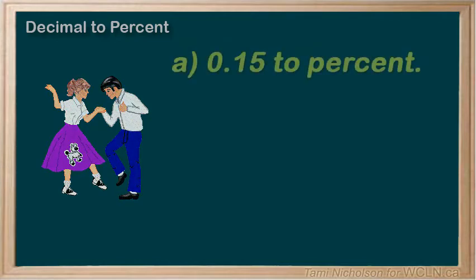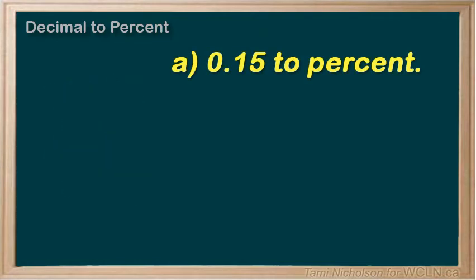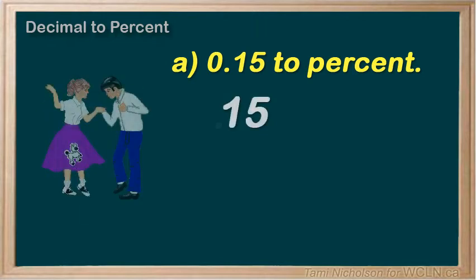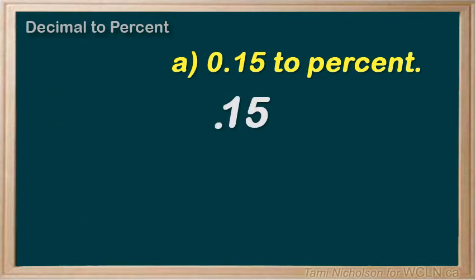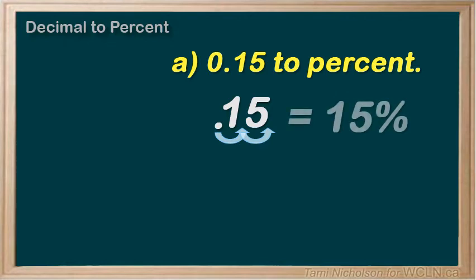Here we have 0.15. Multiply by 100 — do your percent POCA. Move the decimal point two spaces to the right, and 0.15 turns to 15. Add the percent sign. Voila! You have 15 percent.